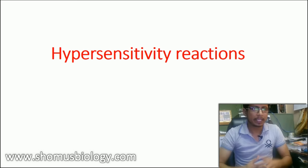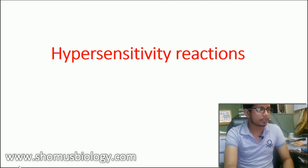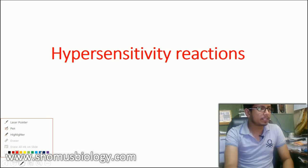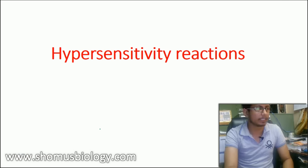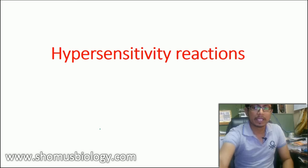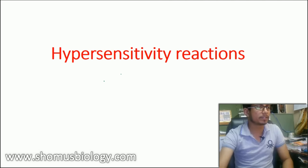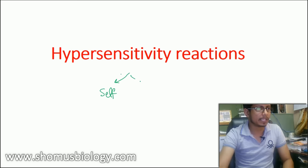First, what is hypersensitivity? If you look at the term it's going to give you a clear idea about what we're talking about. Our immune system is designed to identify between a foreign particle and a self object. There are two types of failure possible for this specific feature — one is self, the other is non-self.